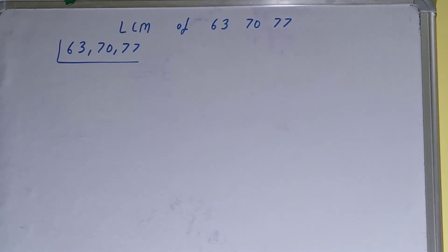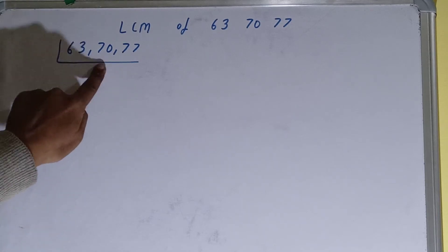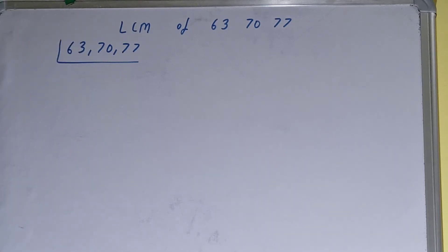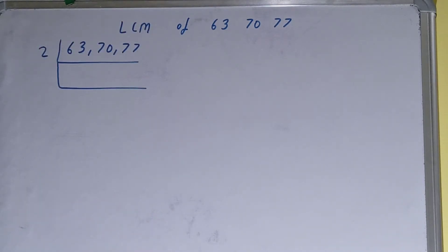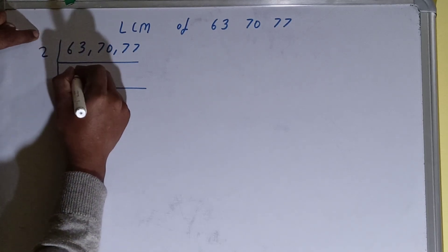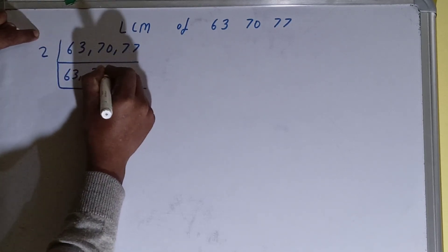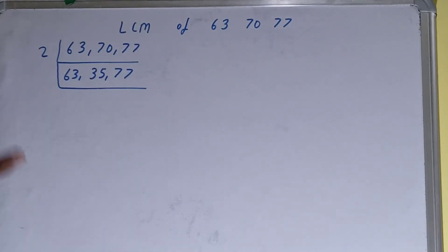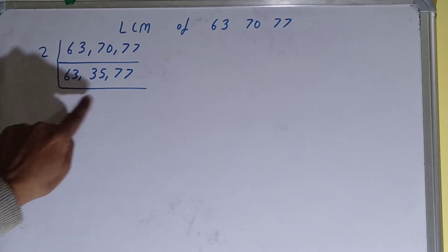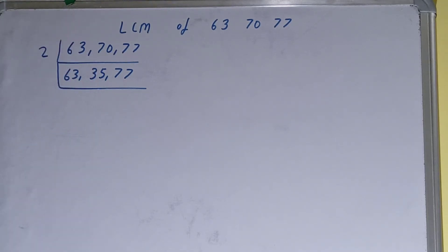We check if any of the numbers are divisible by 2. Only the second number, 70, is divisible, so we'll divide only that number and copy the others down. 63 is not divisible by 2, so we copy it down. 70 becomes 35, and 77 is not divisible so we copy it down. Checking again, none of the numbers are divisible by 2, so we move to the next prime number, which is 3.